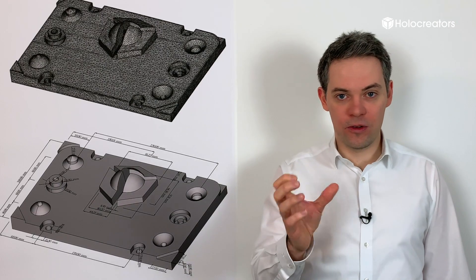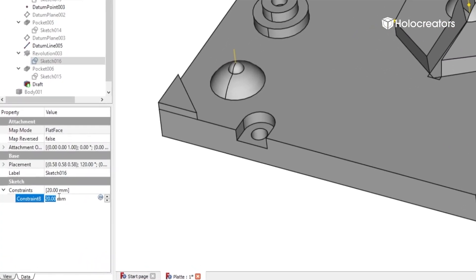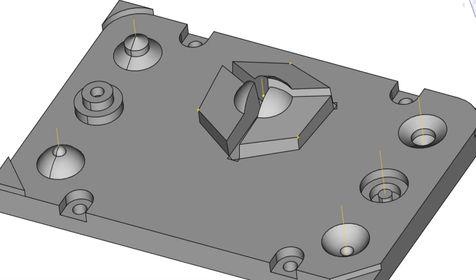To show you how to adjust the history tree, I have prepared this example. Here you can see me changing the parameters and thus modifying the shape of the sphere here in the middle.